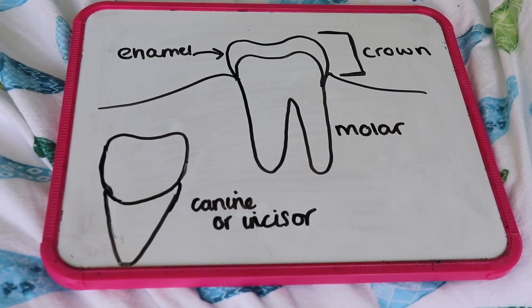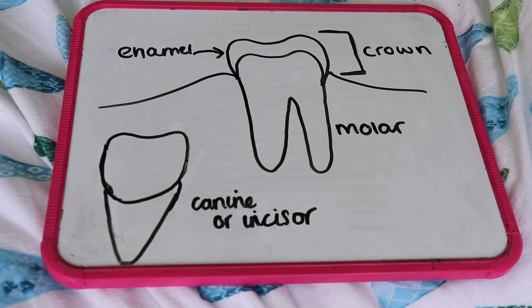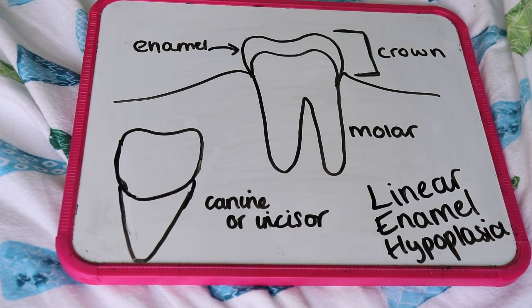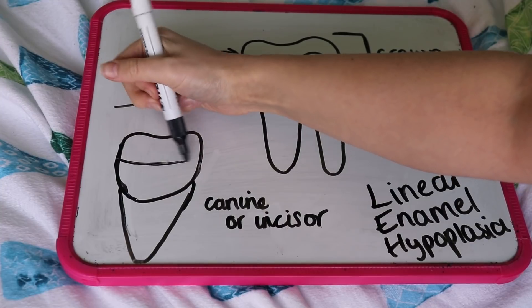There are so many things that the teeth can tell us about a person's life. For now, we're just going to look at features of teeth that may highlight problems with nutrition and childhood stress. The condition we're going to talk about is linear enamel hyperplasia. This is quite a solid indicator of childhood stress, which is probably down to poor nutrition. Linear enamel hyperplasia shows up as a sort of ring on the tooth where the enamel is thinner than the rest of it.